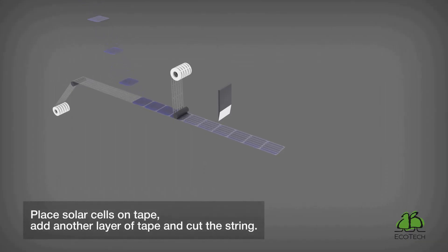Solar cells are placed on the interconnection tape that rolls out and works as an assembly line. As the cells stick to the interconnection tape and roll out, another layer of interconnection tape is laid down on top of the cells.